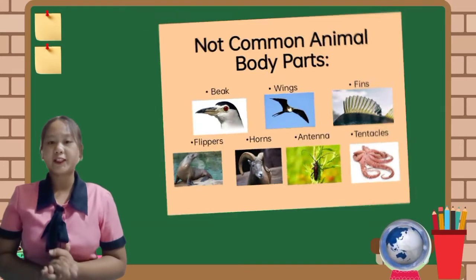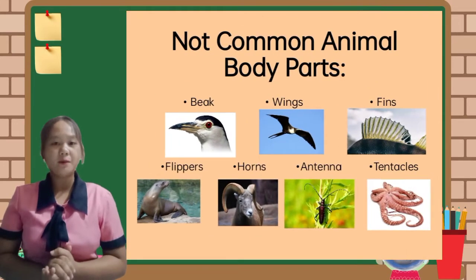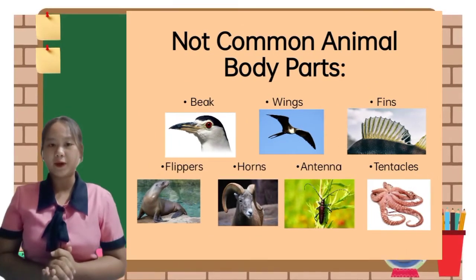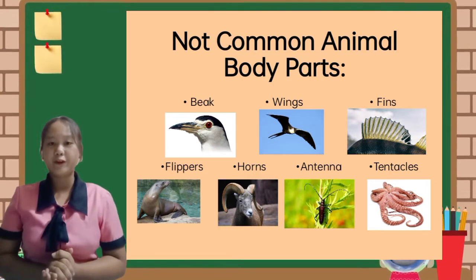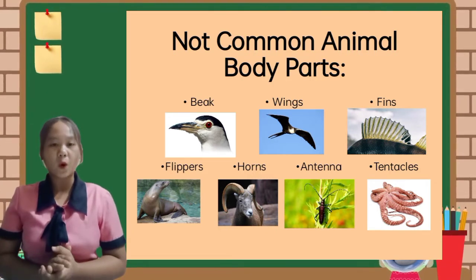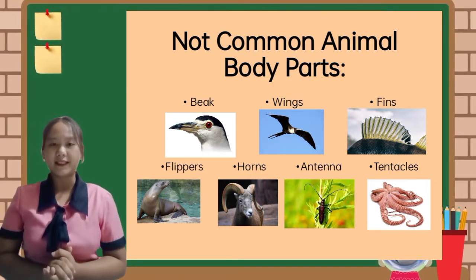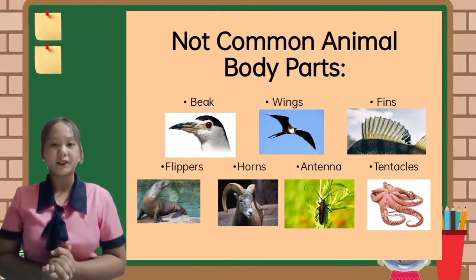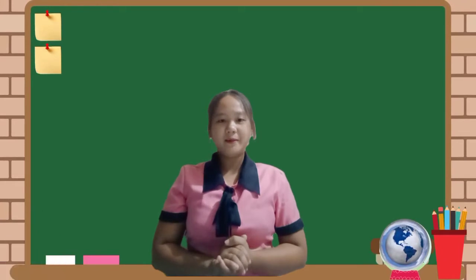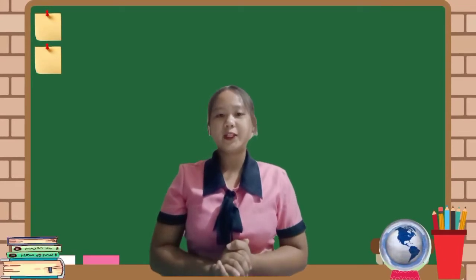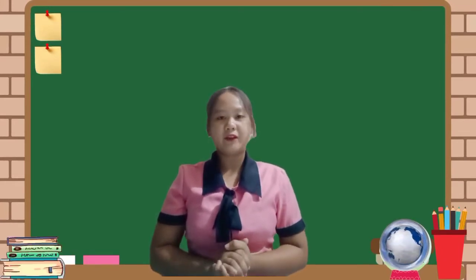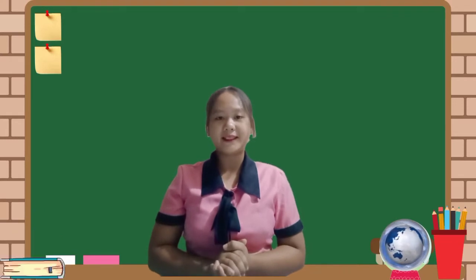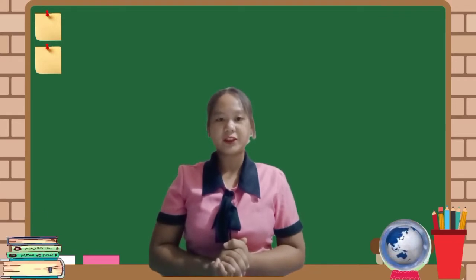Body parts that are not common to all animals are beak, wings, fins, flippers, horns, antenna, tentacles, and others. Each animal has a different appearance and body parts, and each part of the animal's body also has its own function.